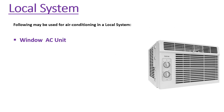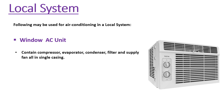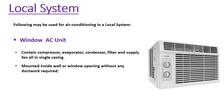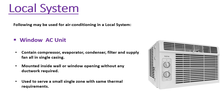Let's look at some examples of air conditioning local systems. The first example is a window AC, which contains a compressor, evaporator, condenser, filter, and supply fan all in a single casing. It is mounted inside a wall or window opening without any duct work required, and is used to serve a small single zone with the same thermal energy requirements.